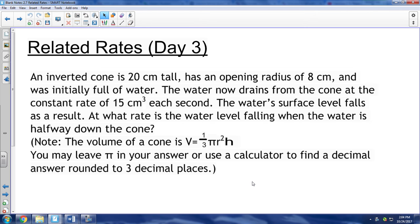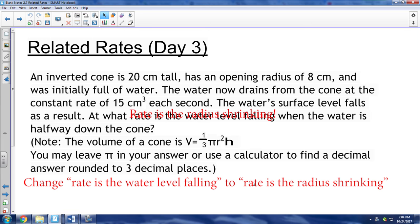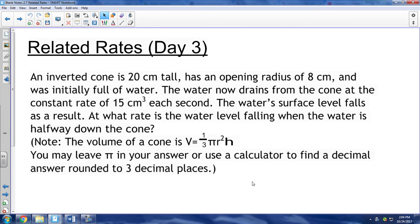All right, this video is on related rates. It's day three of it, or at least your third video on it. And what you need to know is that you'll never need to know the volume of a cone. So if you want to write this down and highlight it, it's one-third pi r squared h. You'll be given that on the AP exam or whatever exam I give you. You will need to know like the area of a triangle or the Pythagorean theorem, things like that. But this problem is about a cone, and you'll never need to know that volume.